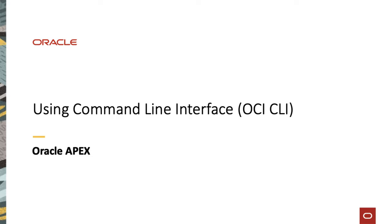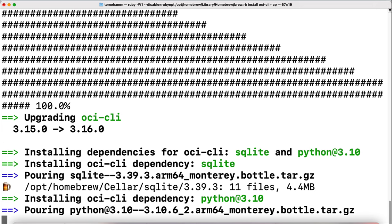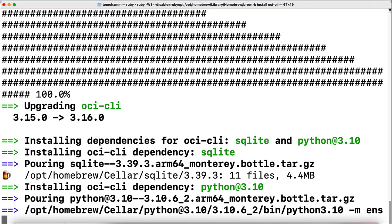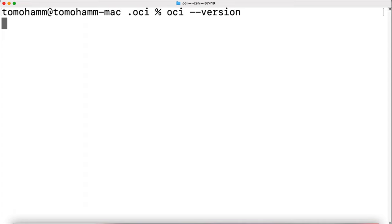Moving on to the next section. After REST APIs, the next option you can use to script the provisioning of Apex on Oracle Cloud is the OCI Command Line Interface utility. In this demo, I will install OCI CLI on my local device and use it to provision an autonomous database with Apex workload on Oracle Cloud. To install OCI CLI on Mac, you can use the Homebrew utility. This installs all OCI CLI dependencies including Python. After successful installation, you can check the version using this command.